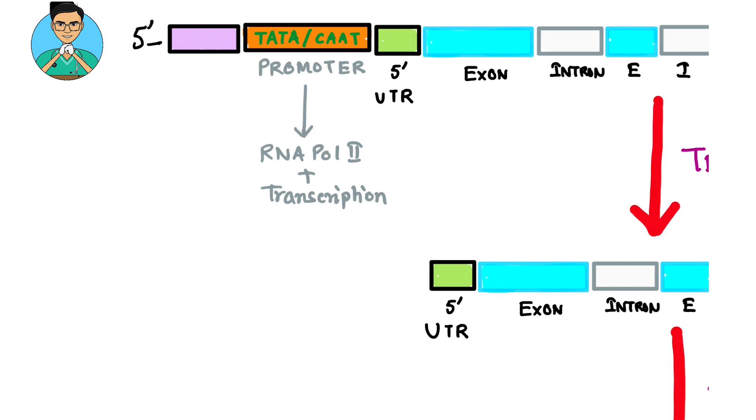Since the promoter sequence contains TATA box or CAAT box, your promoter region works as an ori center during DNA replication. It has AT-rich centers and hence acts as ori during replication.